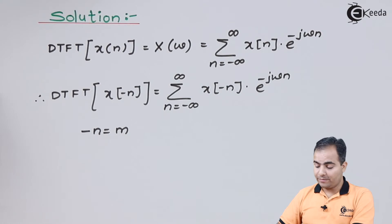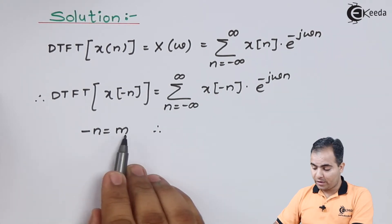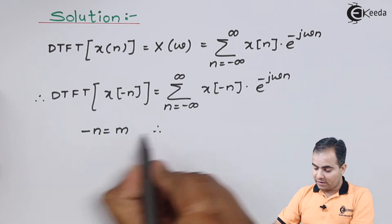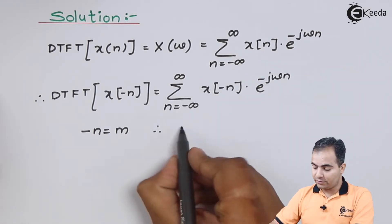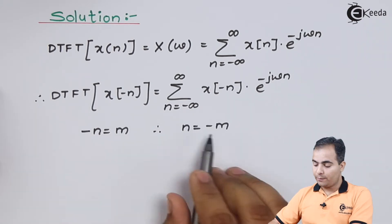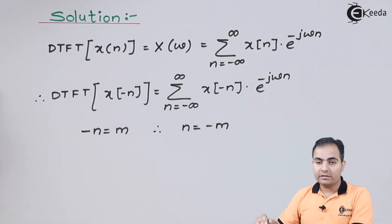minus n equals m. So this minus n is replaced by m, but what about these two n's? I'll multiply minus sign on both sides, so what you will get: my n value is minus m. Now I'm going to substitute both these values in my equation.